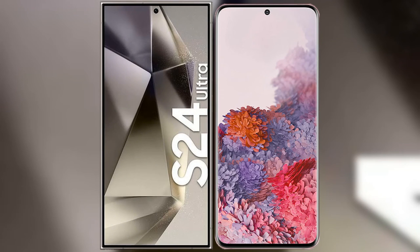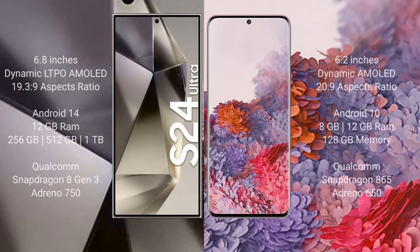I will compare the new Samsung Galaxy S24 Ultra with Samsung Galaxy S20. Samsung Galaxy S24 Ultra comes with a 6.8-inch LTPO AMOLED display and aspect ratio 19.3:9. Samsung Galaxy S20 comes with a 6.2-inch Dynamic AMOLED display and aspect ratio 20:9.